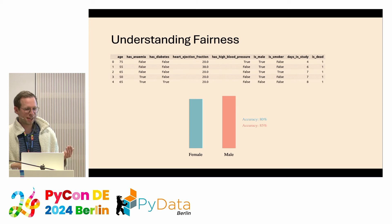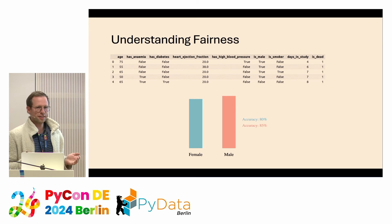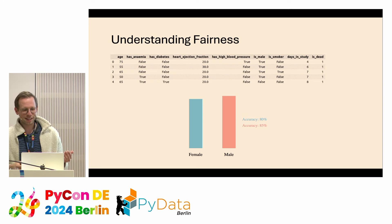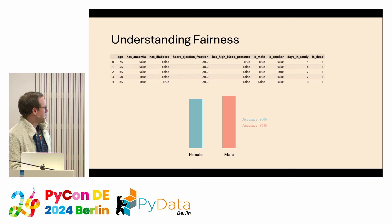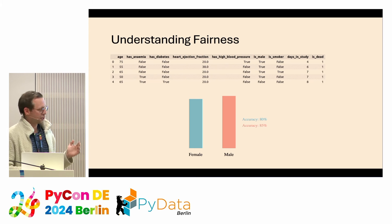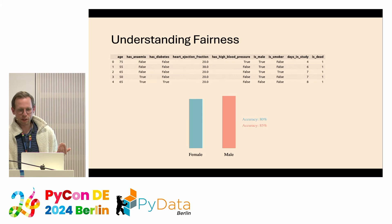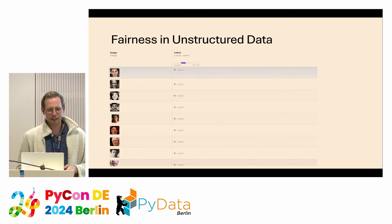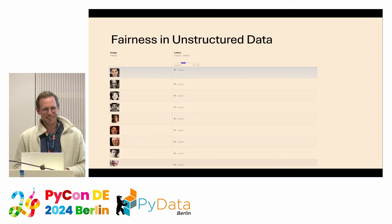How do you ensure fairness? In a tabular data case, it's pretty trivial — you simply slice your data into different groups. For example, you could measure that for people where the attribute sex is female, accuracy is 80%, and for the male category it's 85%, and simply compare them. But for unstructured data, it is not that easy.